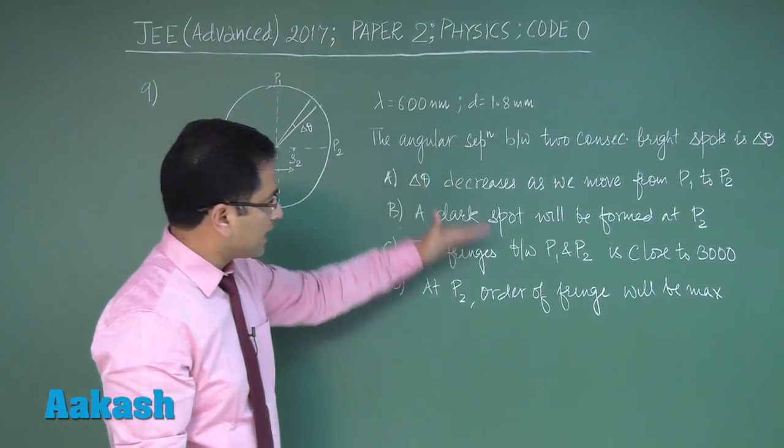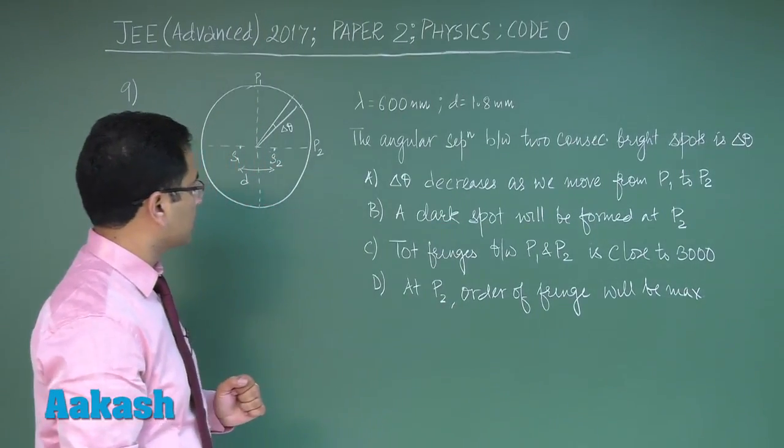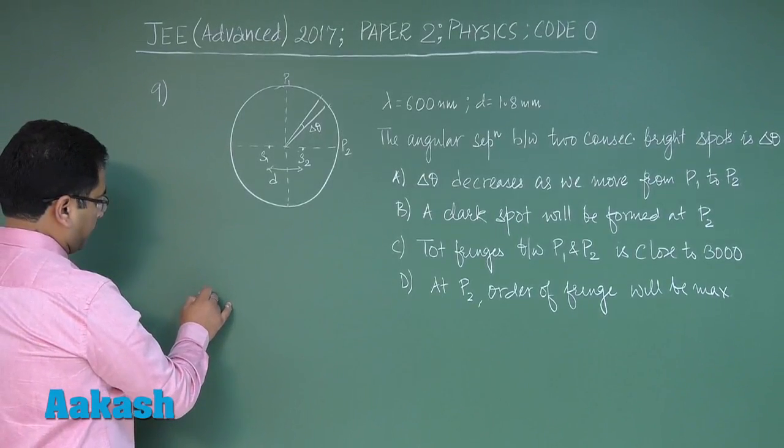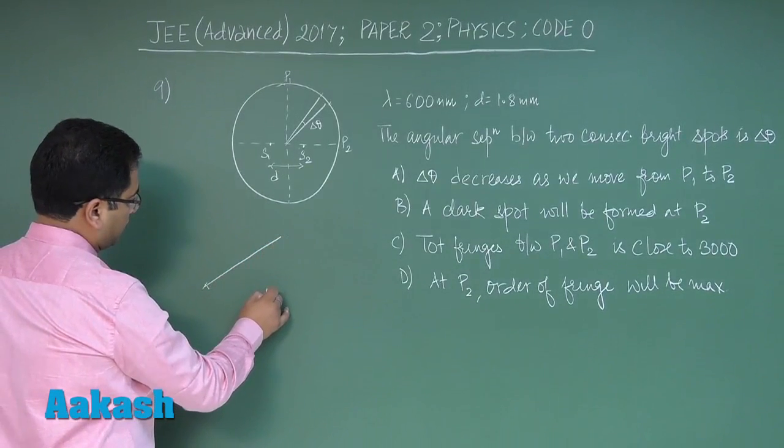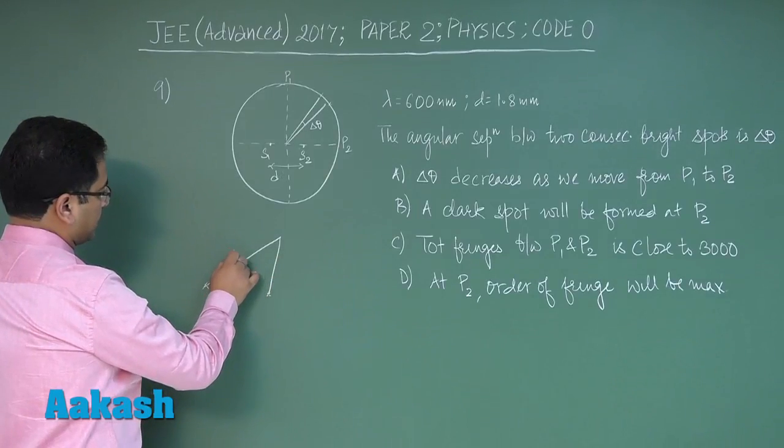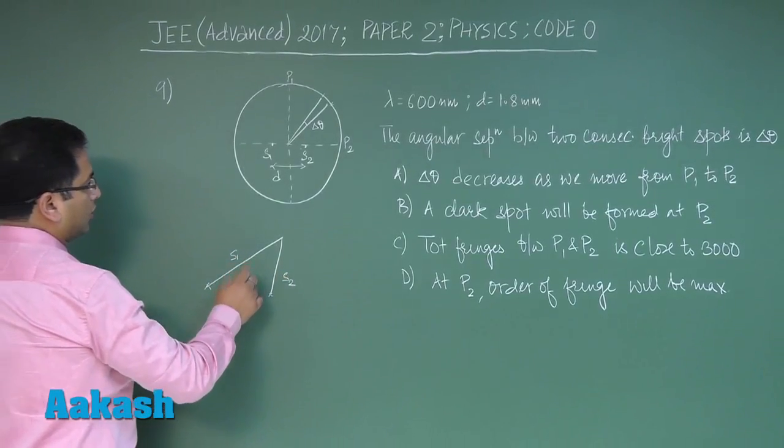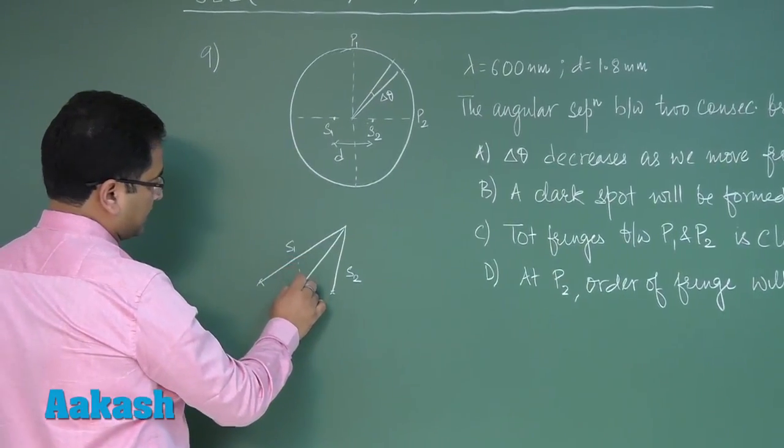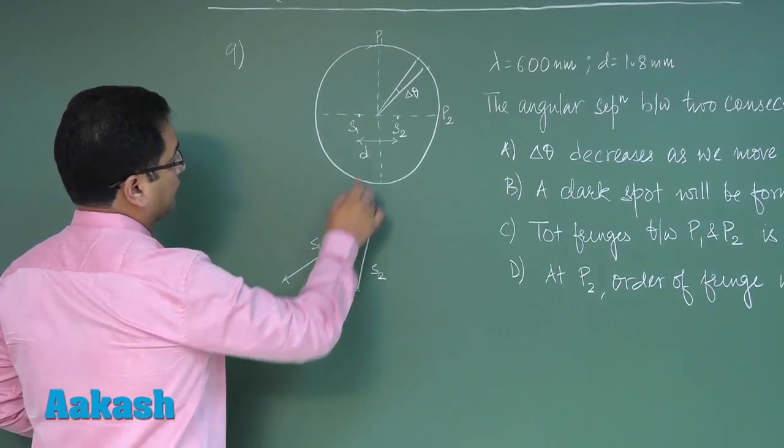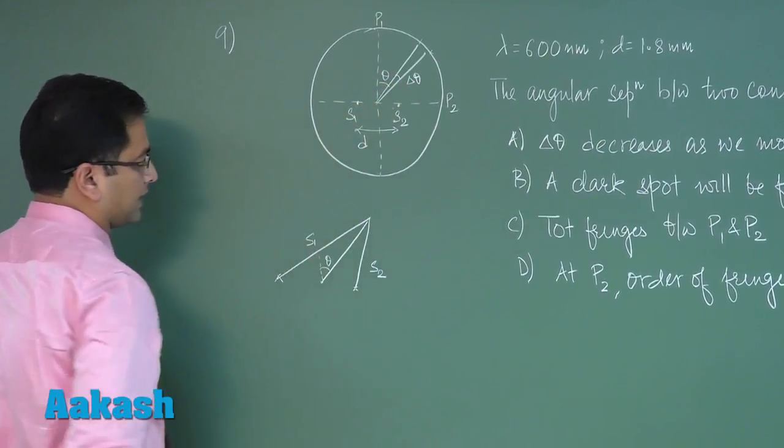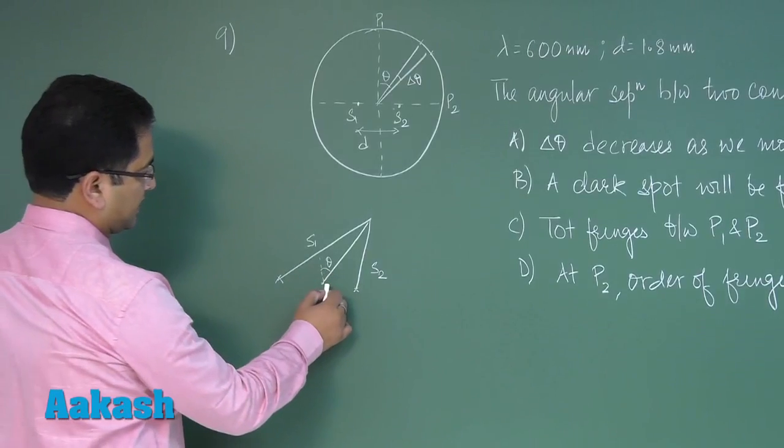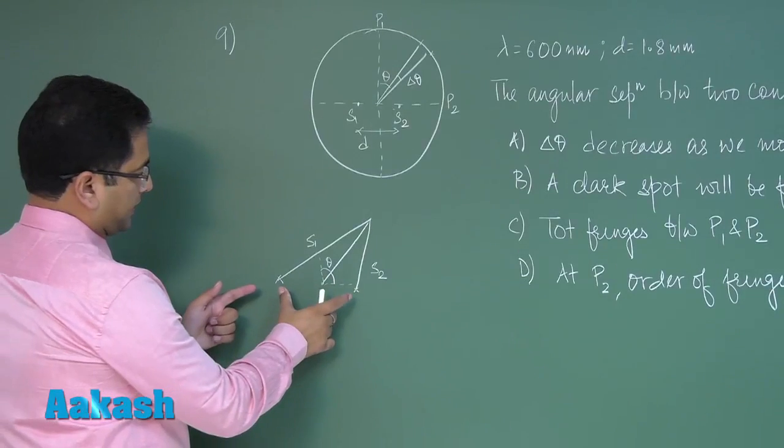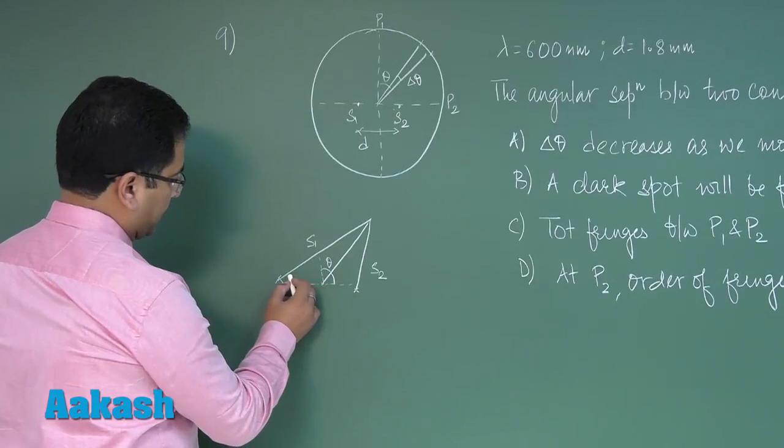Now based on that we need to solve this question. At any given point this is S1, this is S2. Till this particular point we'll take this angle as Theta. If this is Theta, this would be Delta Theta. Now if this is Theta, this angle would be pi by 2 minus Theta, and of course if this is pi by 2 minus Theta, even this angle would be pi by 2 minus Theta.